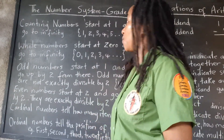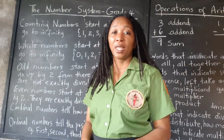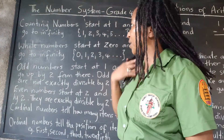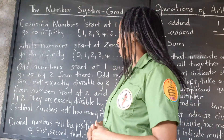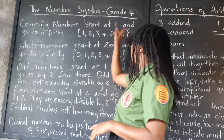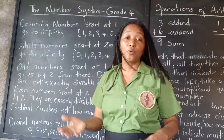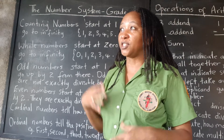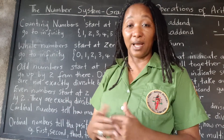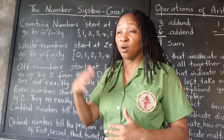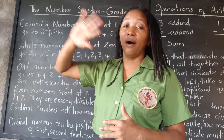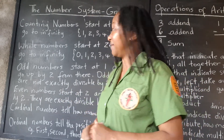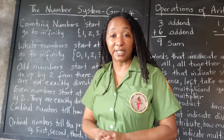Good morning scholars. This morning we're going to look at the number system at the grade four level - an introduction to the number system. Counting numbers start at one and go to infinity. Infinity is a concept used in mathematics to describe the fact that numbers go on and on and on.